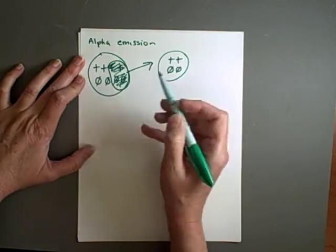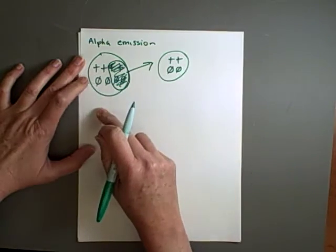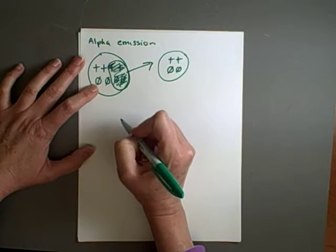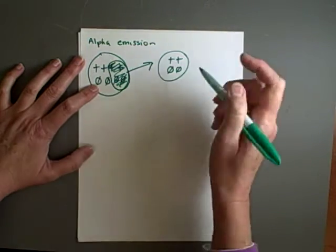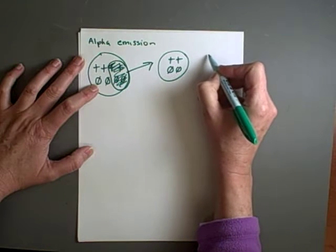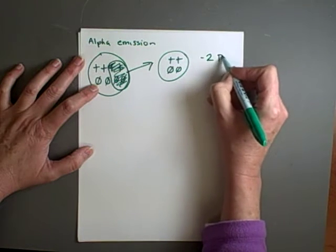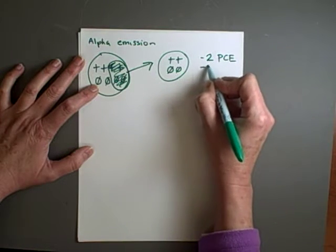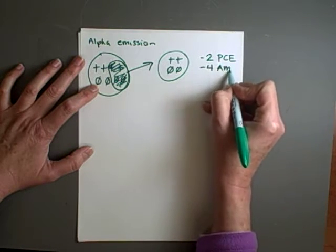So what you're going to have is a new parent. So this was my parent. It's now broken down to form daughter, something more stable. And what I'm going to have is an element now that is two less on the periodic chart of the elements and minus four atomic mass units.